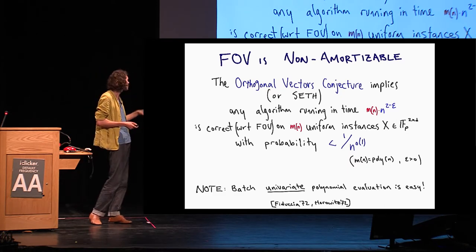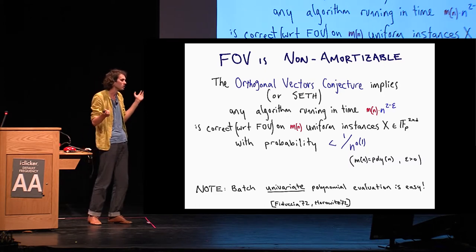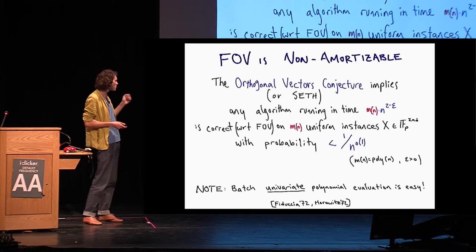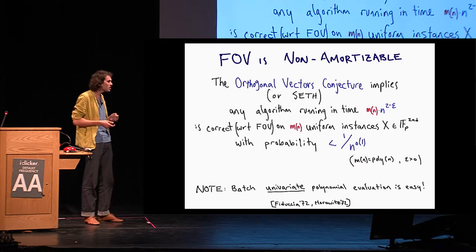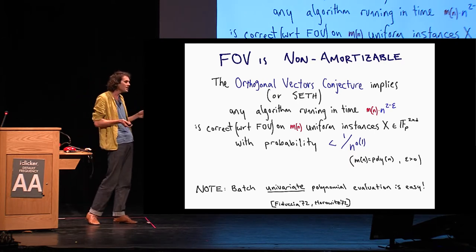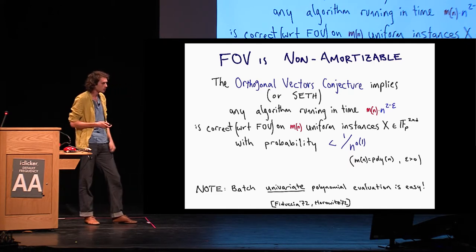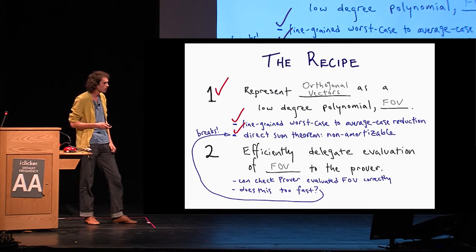So what is downward self-reducibility here? How does this work? We have our two sets of vectors, u and v. It's very simple. What are we going to do? We're just going to split them into two, each u and v into two smaller sets, and we're going to compare all of the pairs of these smaller sets. And FOV is simply the sum of FOV called on these smaller sets. And combining solutions to the smaller problems very easily translates to a solution to the bigger problem. And this is going to... With some more work, you can prove that it works even in this sort of Turing-style reductions that we need. What do we prove? That orthogonal vectors conjecture implies that any algorithm running in time m times n squared minus epsilon is correct on m uniform instances with low probability.